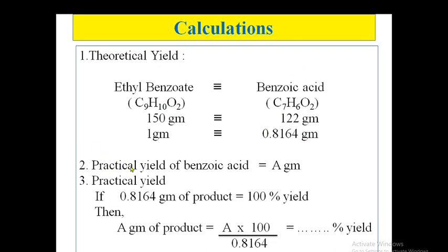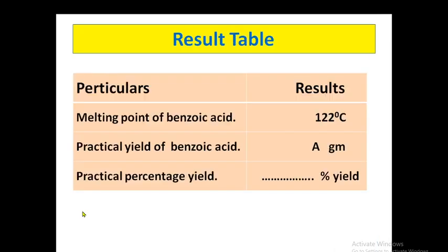What's the practical yield of your experiment? Write down that value — call it 'a' grams. Whatever practical yield you are getting, write that here as 'a' grams. Then the practical percentage yield is calculated by this formula: if 0.8164 gram of product equals 100% yield, then 'a' grams of product will be a × 100 ÷ 0.8164. Whatever result you get is the percentage yield of the given product. In this way you can easily calculate the theoretical yield as well as the practical yield.